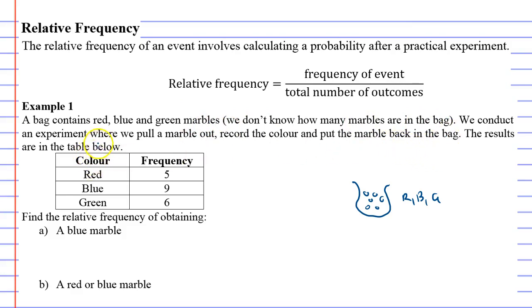We conduct an experiment where we pull the marble out, record the color and put the marble back in the bag. The results from the table below. So when we did the experiment we pulled a red marble out five times, a blue marble out nine times and a green marble six times. So what that tells me is that there's probably more blue marbles in this bag than any other color. We don't know exactly how many there are. We just know that there's probably more because it came out more often.